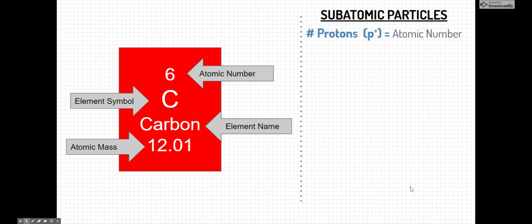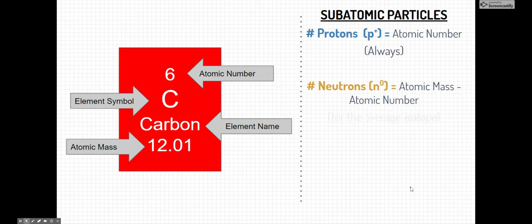We'll start with the number of protons. It's probably the most important number and that's equal to the atomic number because protons give an atom its identity and this is always true. Now, how do we find the number of neutrons? Well, it's a little bit more complicated, but we're going to take the atomic mass. And if you remember, the mass is the nucleus of the atom, which is the number of protons and the number of neutrons. So if we take the atomic mass and subtract out the number of protons or the atomic number, then we're going to get the number of neutrons that are left over.